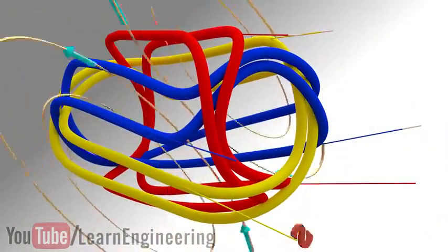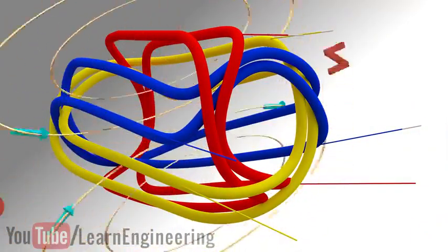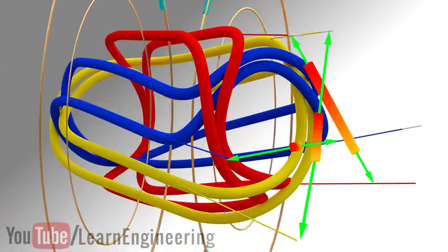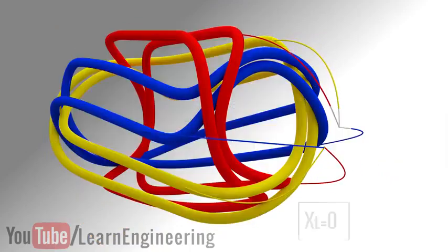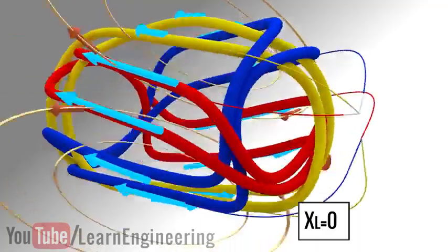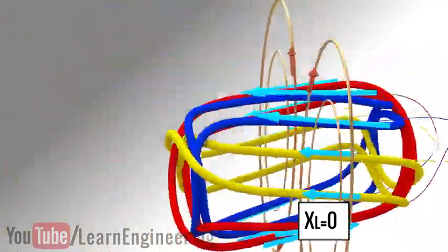Here again, the RMF induces EMF across the terminals of the windings. Let us join the winding ends in a star connection and again assume that the inductive reactance is zero. The current flow established in the winding will be as shown.